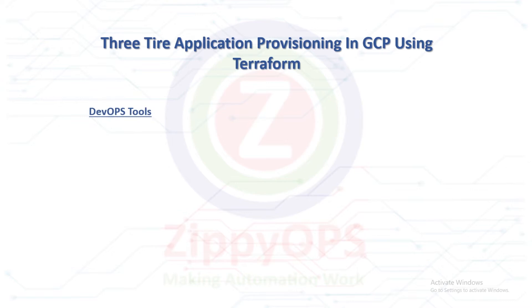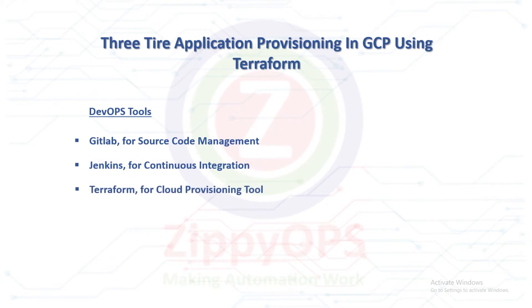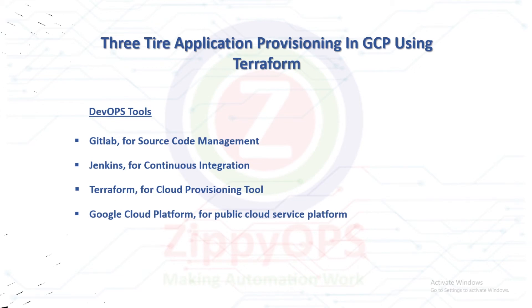The tools used in this GCP 3-Tier Application Provisioning are: GitLab, used for source code management; Jenkins, used for continuous integration; Terraform, used for cloud provisioning; and Google Cloud Platform, for public cloud service platform.